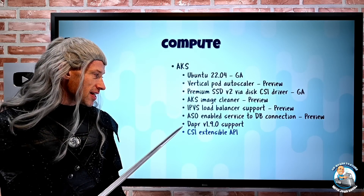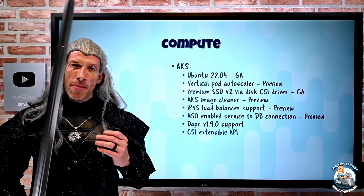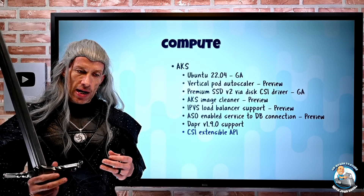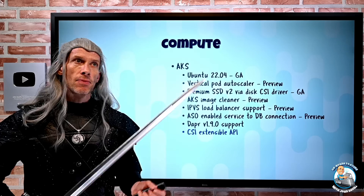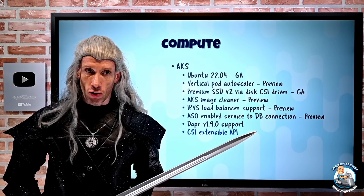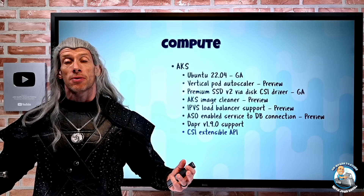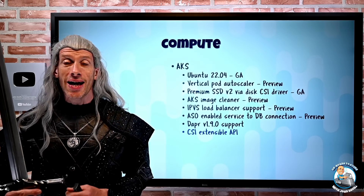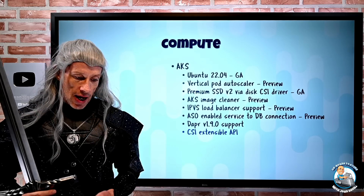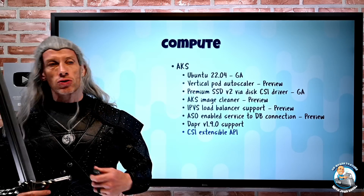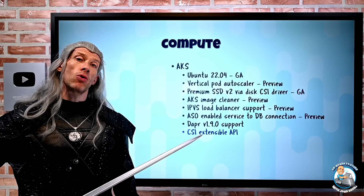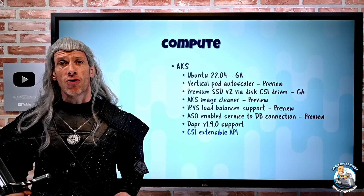We now have this CSI extensible API. There are many CSIs — container storage interface drivers available for AKS. What I can now do with this API is add additional CSI drivers, maybe open source, for different types of storage I want to use. I can even disable some of the ones enabled by default. If you think about Azure Disk, Azure Files, and Blob — maybe I don't want some of those. I can go and disable those or add other ones I want.